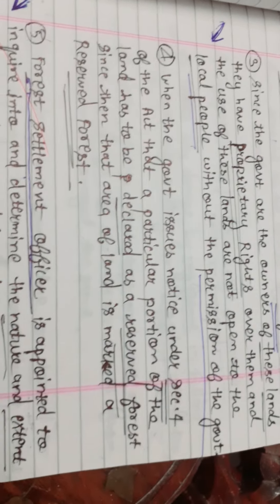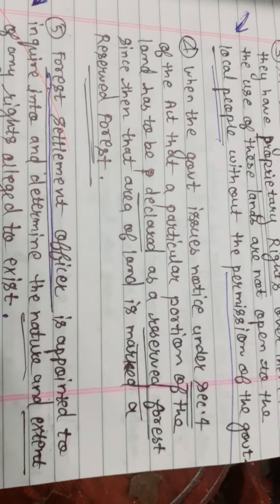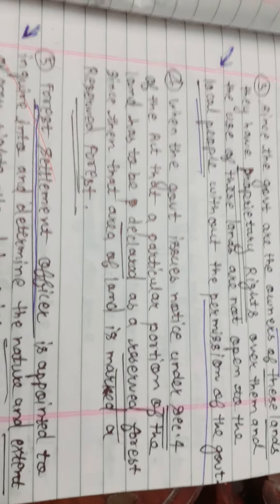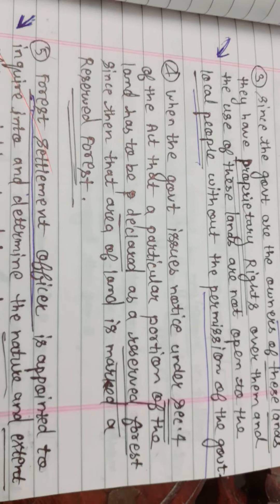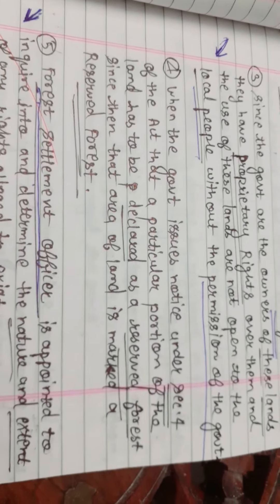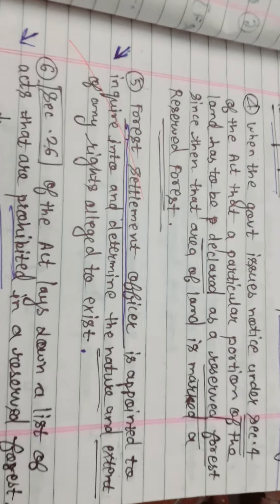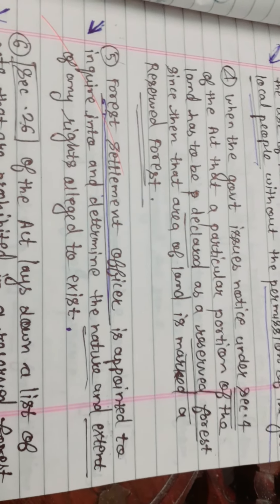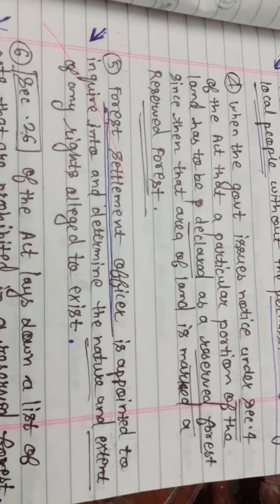When the government issues notice under Section 4 of the Act that a particular portion of the land has to be declared as a reserve forest, that area of land is marked as a reserve forest. Forest settlement officer is appointed to enquire into and determine the nature and extent of any rights alleged to exist.